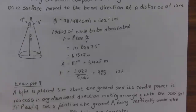The radius of the illuminated circle at 10 m is R = L·tan(θ/2) = 10 × tan(7.5°) = 1.1317 m, giving area = π·R² = 5.445 m². Therefore average illumination E = 5027 / 5.445 = 923 lux.